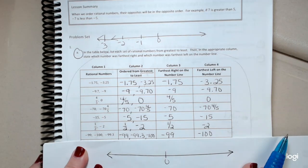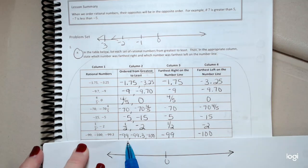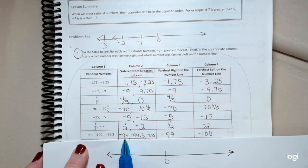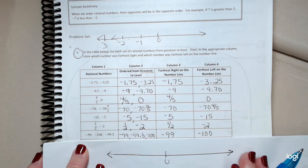The next one, you had three rational numbers. I put them in order, negative 99, negative 99.3, and negative 100. They would go in that order. The number that's furthest to the right would be the negative 99, and furthest to the left would be negative 100.